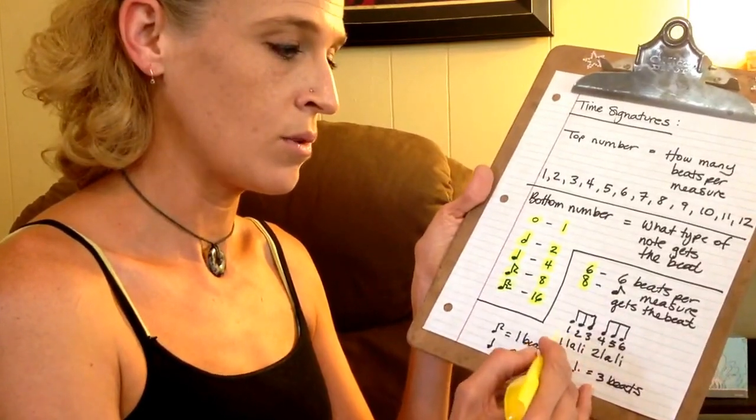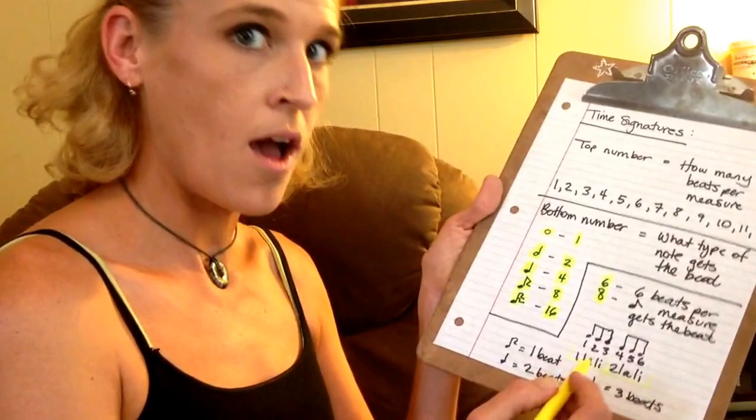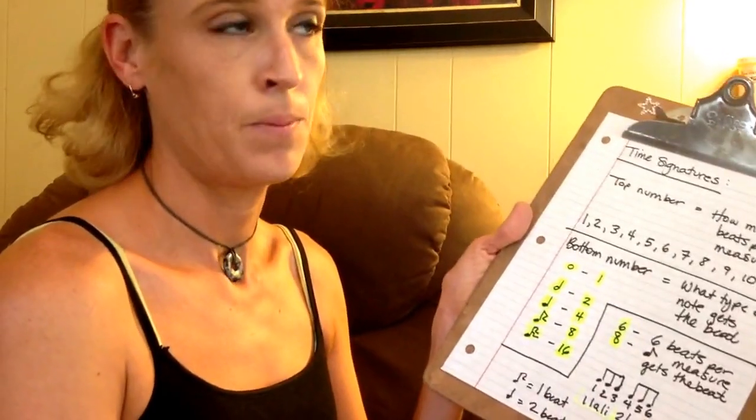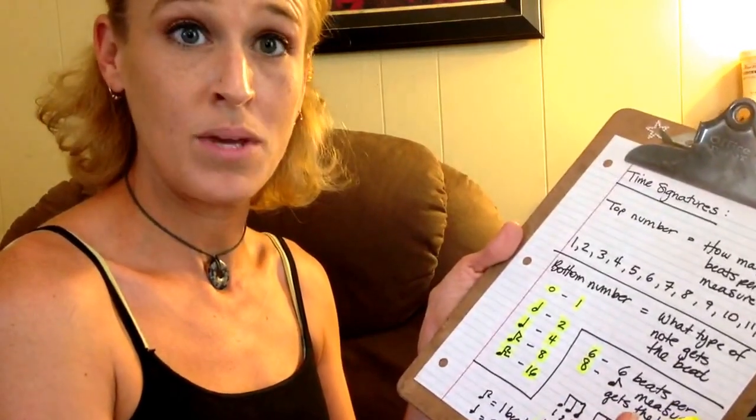Or you can count it in groups of 2 with 3 in each group: 1 lolly, 2 lolly. This gives you an opportunity to play slower or faster depending on the style of the piece.